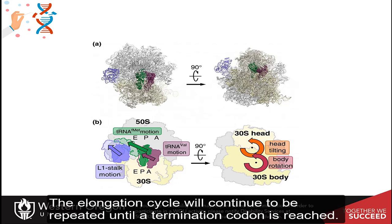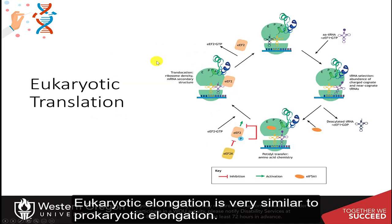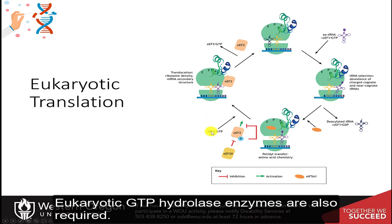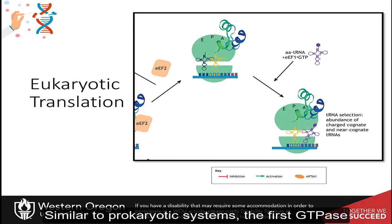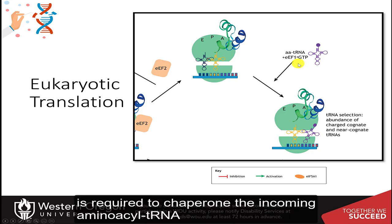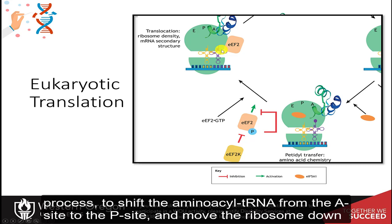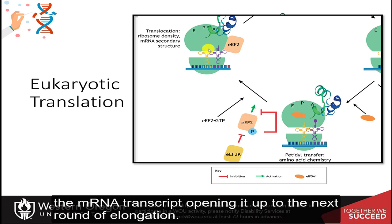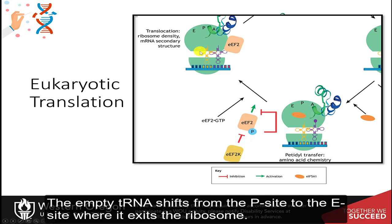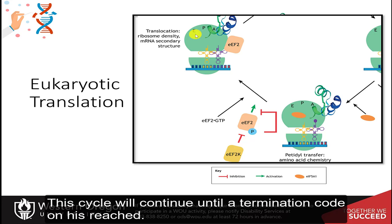The elongation cycle will continue to be repeated until a termination codon is reached. Eukaryotic elongation is very similar to prokaryotic elongation. Eukaryotic GTPase enzymes are also required: the first GTPase chaperones the incoming aminoacyl tRNA to the A site of the ribosome, and the second GTPase is used in the translocation process to shift the aminoacyl tRNA from the A site to the P site and move the ribosome down the messenger RNA transcript, opening it up to the next round of elongation. The empty tRNA shifts from the P site to the E site where it exits the ribosome, and this cycle continues until a termination codon is reached.